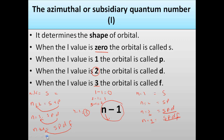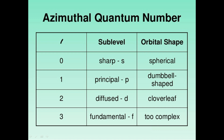The azimuthal quantum number helps describe the shape of the orbital. For s, l = 0, and its shape is spherical — I will show you the spherical shape. For p, l = 1, and its shape is dumbbell. For d, l = 2, and its shape is double dumbbell or clover leaf. For f (fundamental), l = 3, and it has very complex shapes that are difficult to draw.